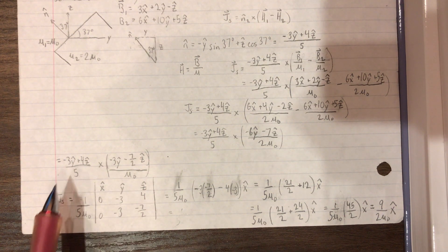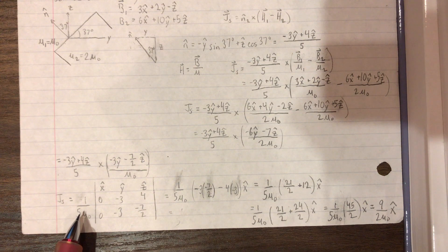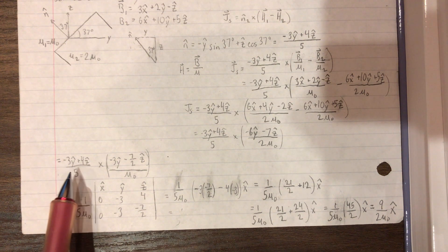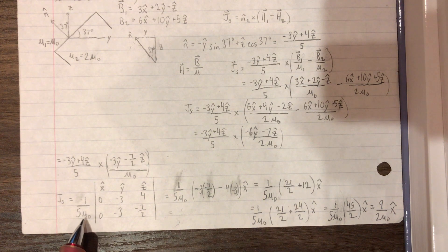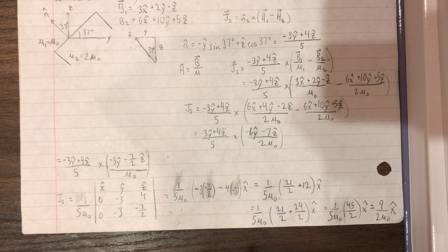So simplifying even more, we're going to get this negative 3y hat minus 7 over 2z hat over mu0. And then since we're doing cross product, we're going to use the y and z components. And we're going to factor out the 5mu0.